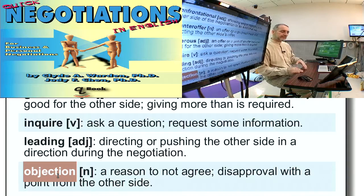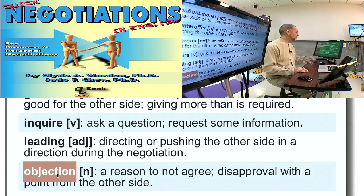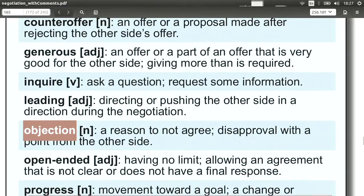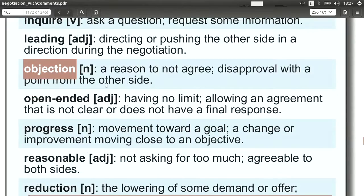Objection means to disagree or have a different perspective from your counterpart. The verb is object, so you can say 'I have many objections.' Another way to use this is to ask your counterpart, 'What are your objections?' You say you don't like this offer or counteroffer — please tell me your objections.